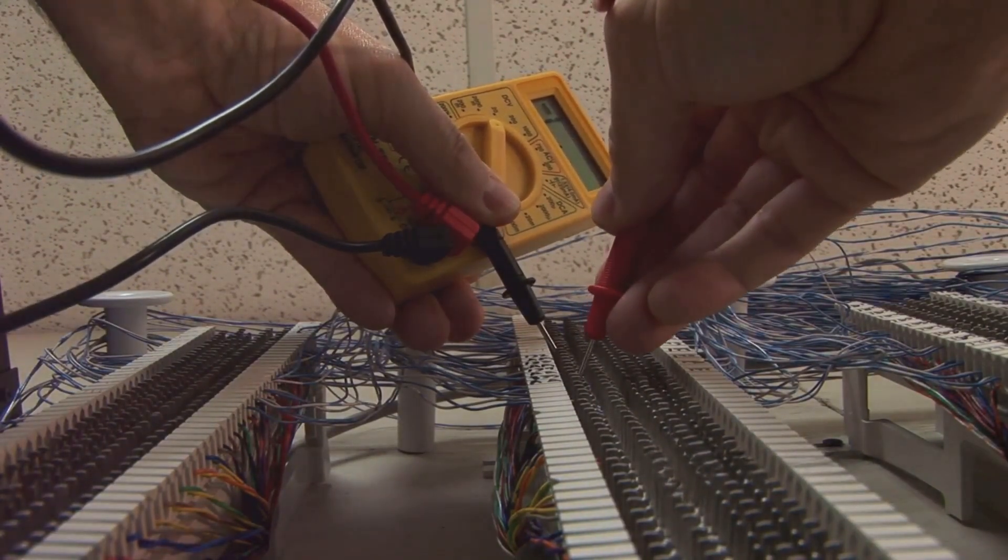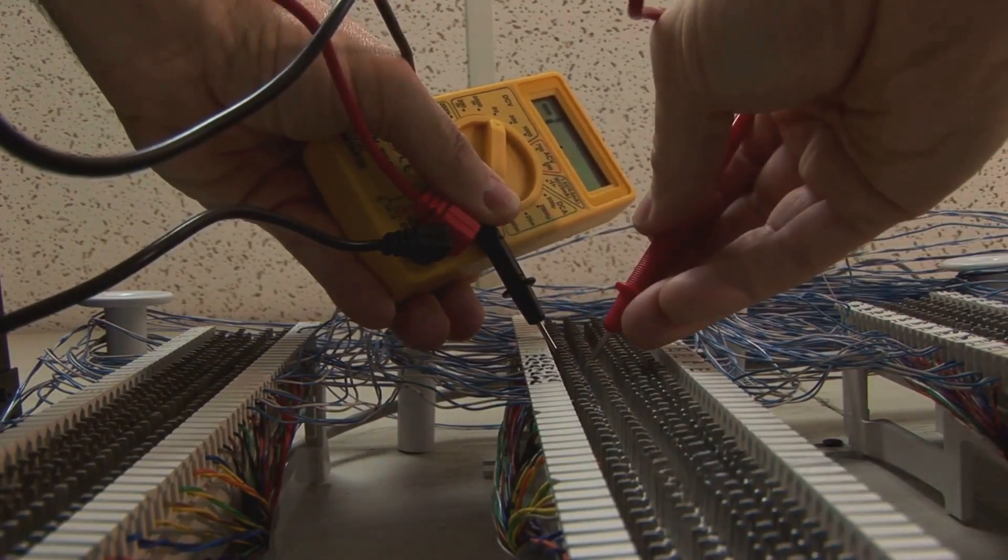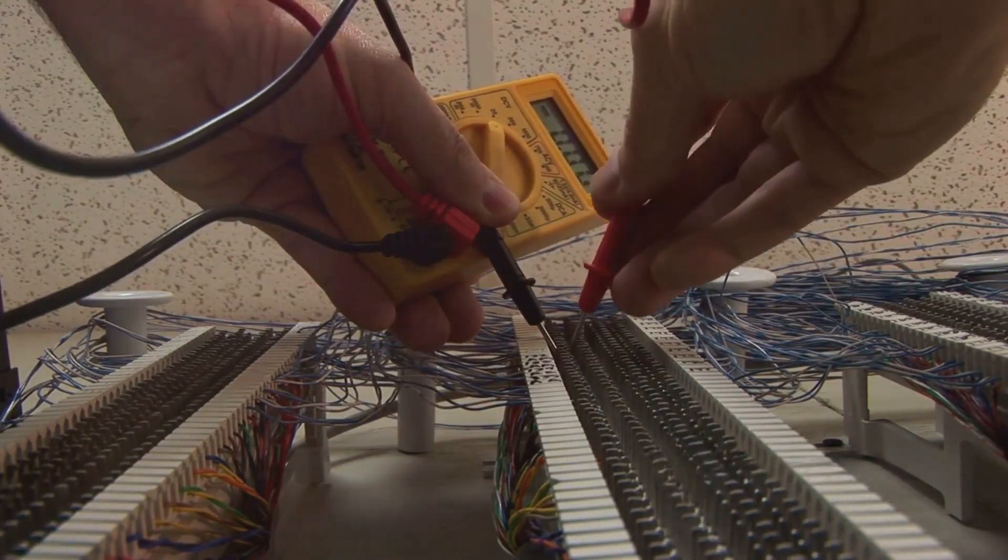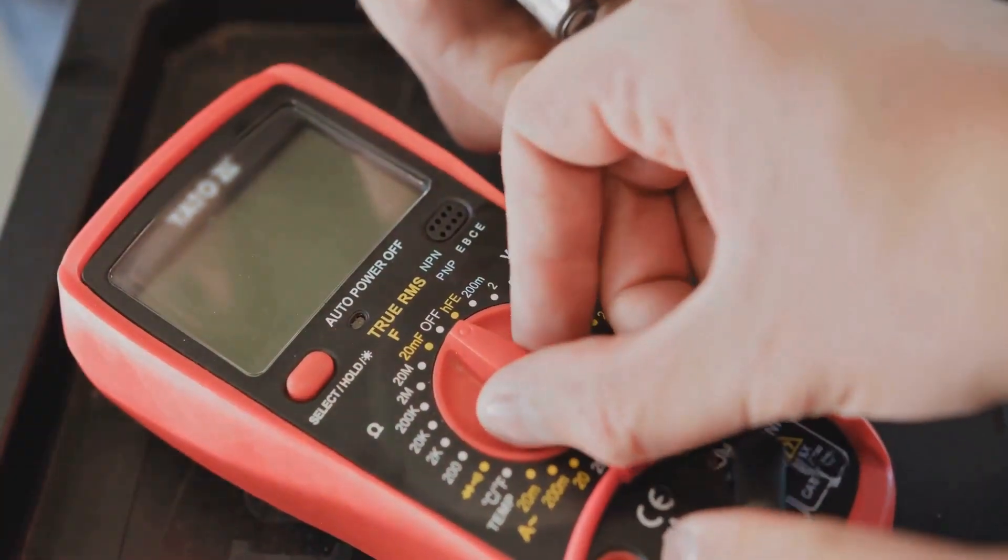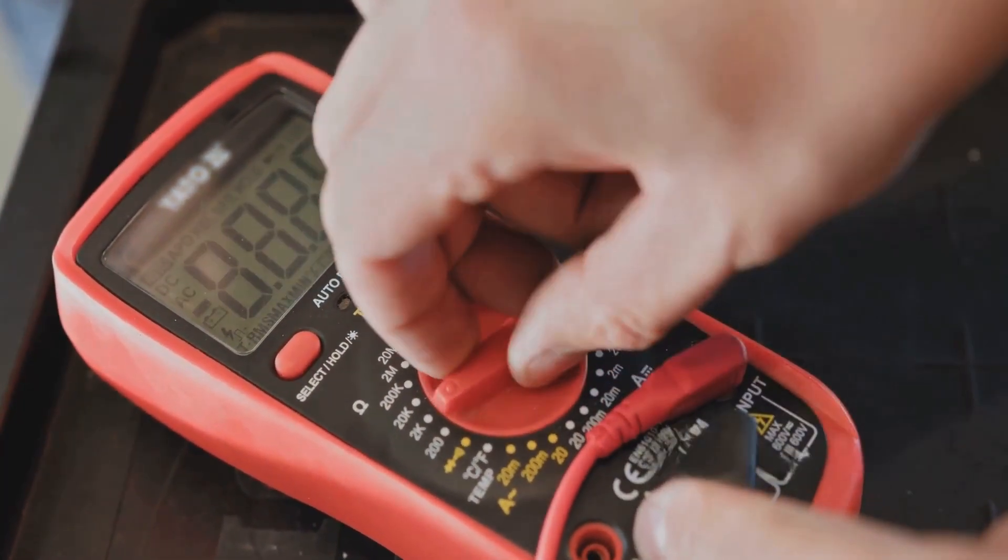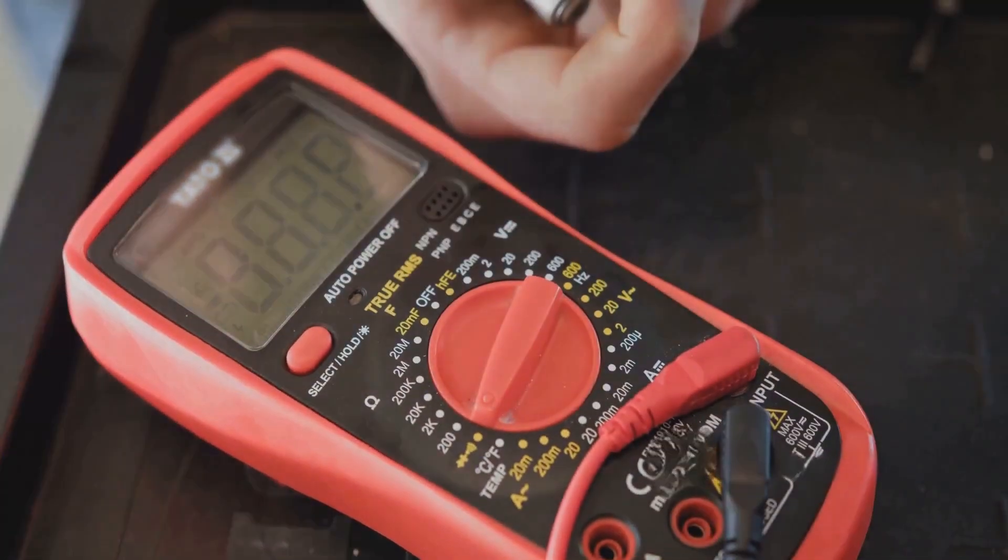Step 3: Check the probes. Probes are the parts that come into direct contact with the voltage source and they can wear out over time. This wear and tear can cause inaccurate readings or no readings at all.